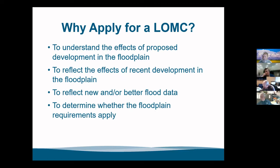Why would we want to apply for a letter of map change? The main reason is to determine whether the floodplain requirements apply. If you're trying to get a letter of map amendment, you're saying your house is higher — you shouldn't need a permit to build an addition because all the ground around your house is higher than the floodwaters and shouldn't have been included. Or if you're bringing in fill and elevated the property, you're saying you're not in the floodplain anymore and the floodplain requirements shouldn't apply. The same thing if you're doing a LOMR for your whole community — you want accurate maps to find out who really needs to be following your regulations.